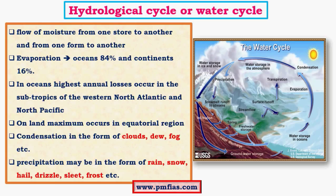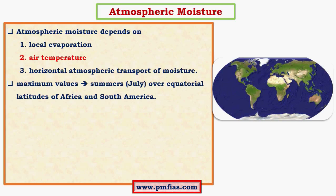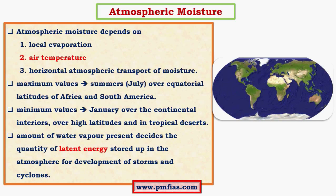After evaporation we have condensation, which takes place in different forms we will see in detail. After that we have precipitation, which also happens in different forms and types — that will be covered in the next video. Atmospheric moisture depends on three important factors: local evaporation, which is directly related to the sun's insolation and air temperature.